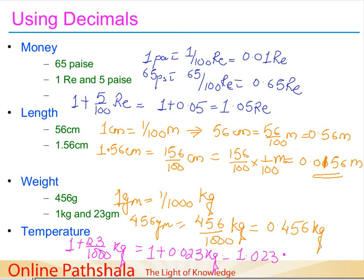This way you can convert smaller units into larger ones — centimeters to meters, grams to kilograms. Similarly, temperature is also represented using decimals: for example, 98.7 degrees as body temperature, or 36.5 degrees, or today's temperature in Bangalore being 19.1 degrees centigrade. So decimals are used in day-to-day life for temperature, weight, length, money, and many other parameters. That's all about applying decimals in everyday life — thank you.